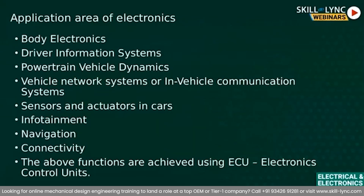Let's take a look at the list of application areas where electronics can be applied. The first one is body electronics, which includes automotive lighting, car access and security systems, mirrors, body motors, power seats, and body sensors like obstacle detection sensors and vehicle occupant detection sensors. Other application areas include driver information systems, powertrain, vehicle dynamics, vehicle network systems or in-vehicle communication systems, sensors and actuators, in-car infotainment systems, navigation, connectivity systems.